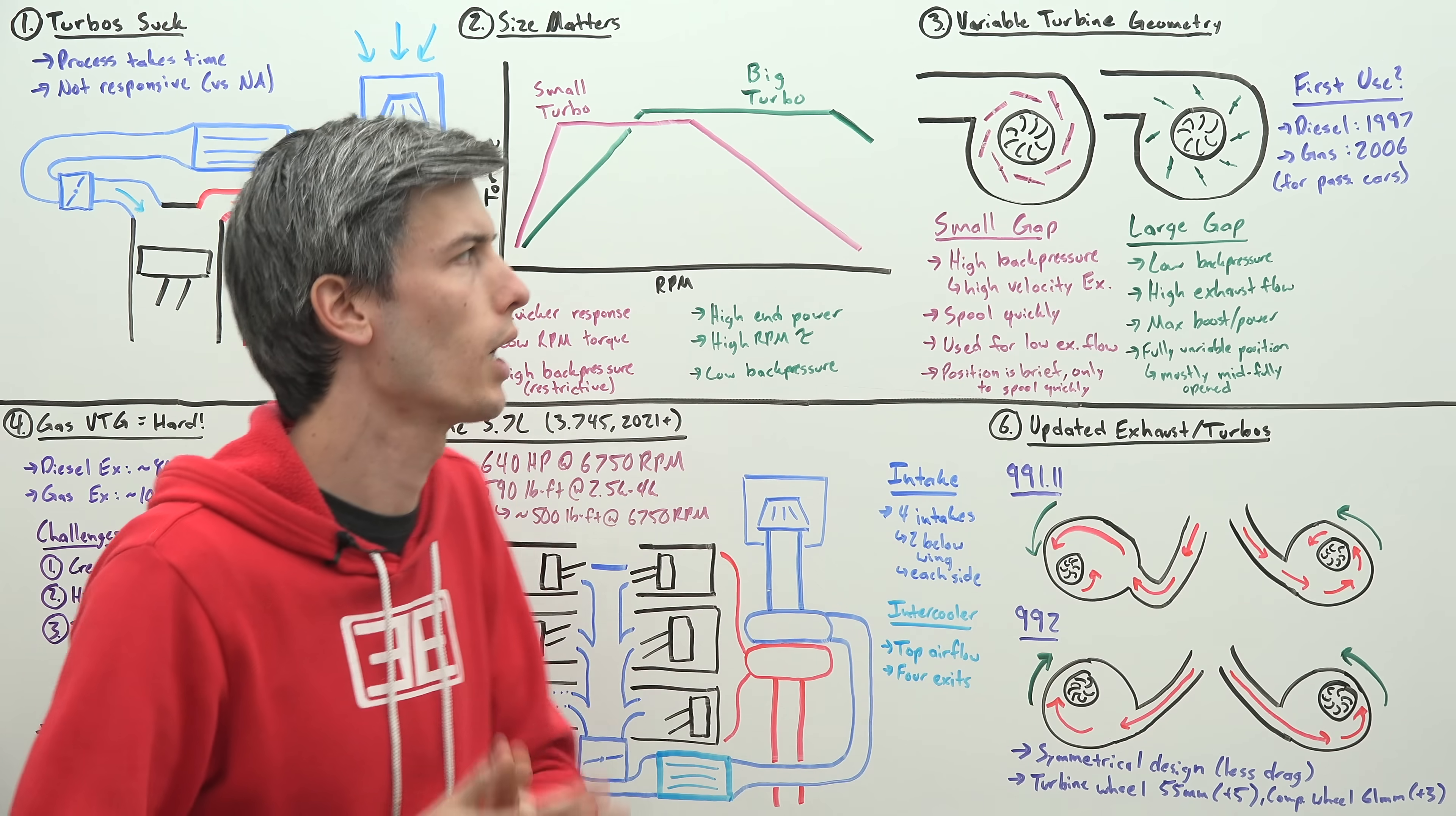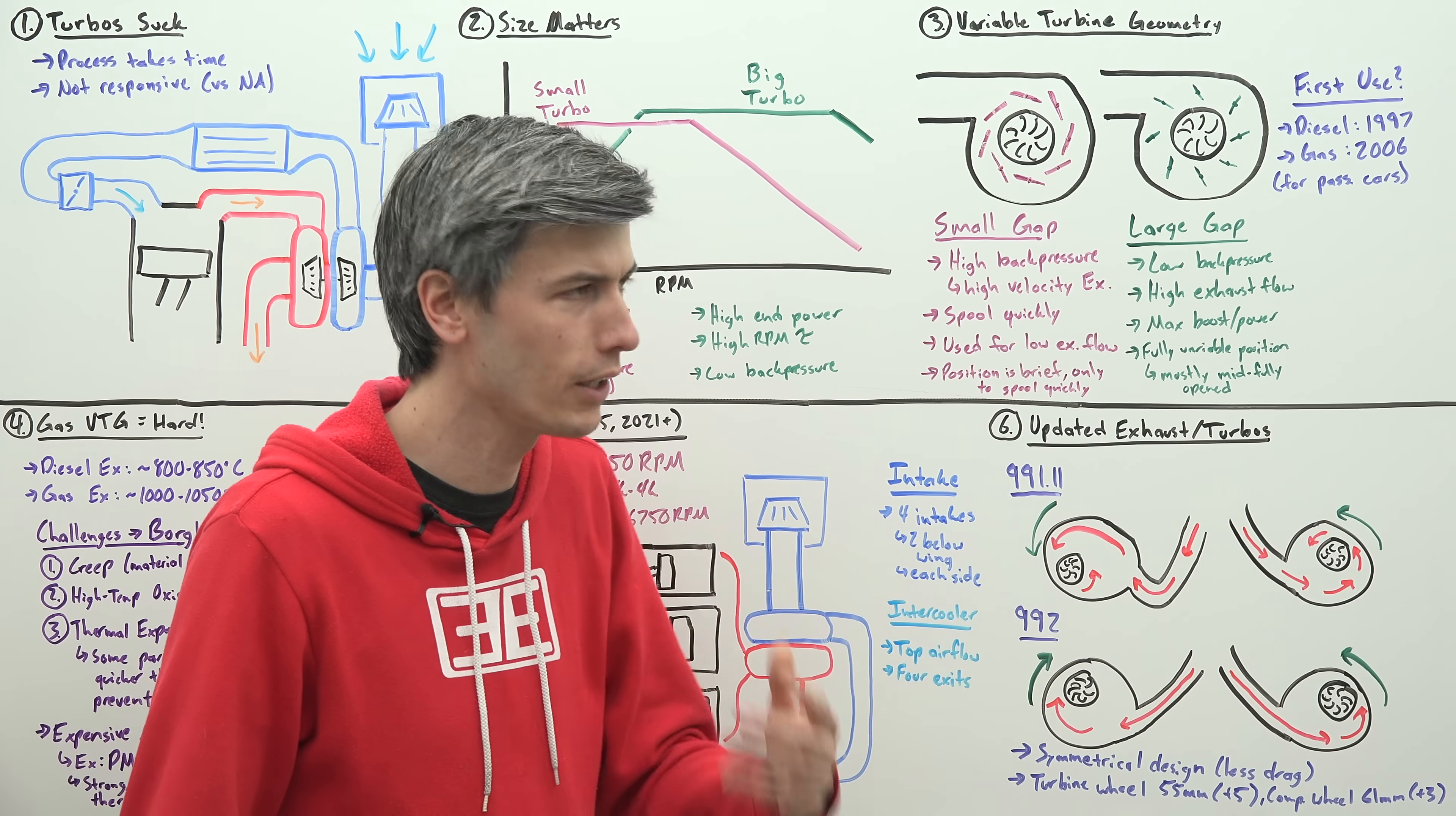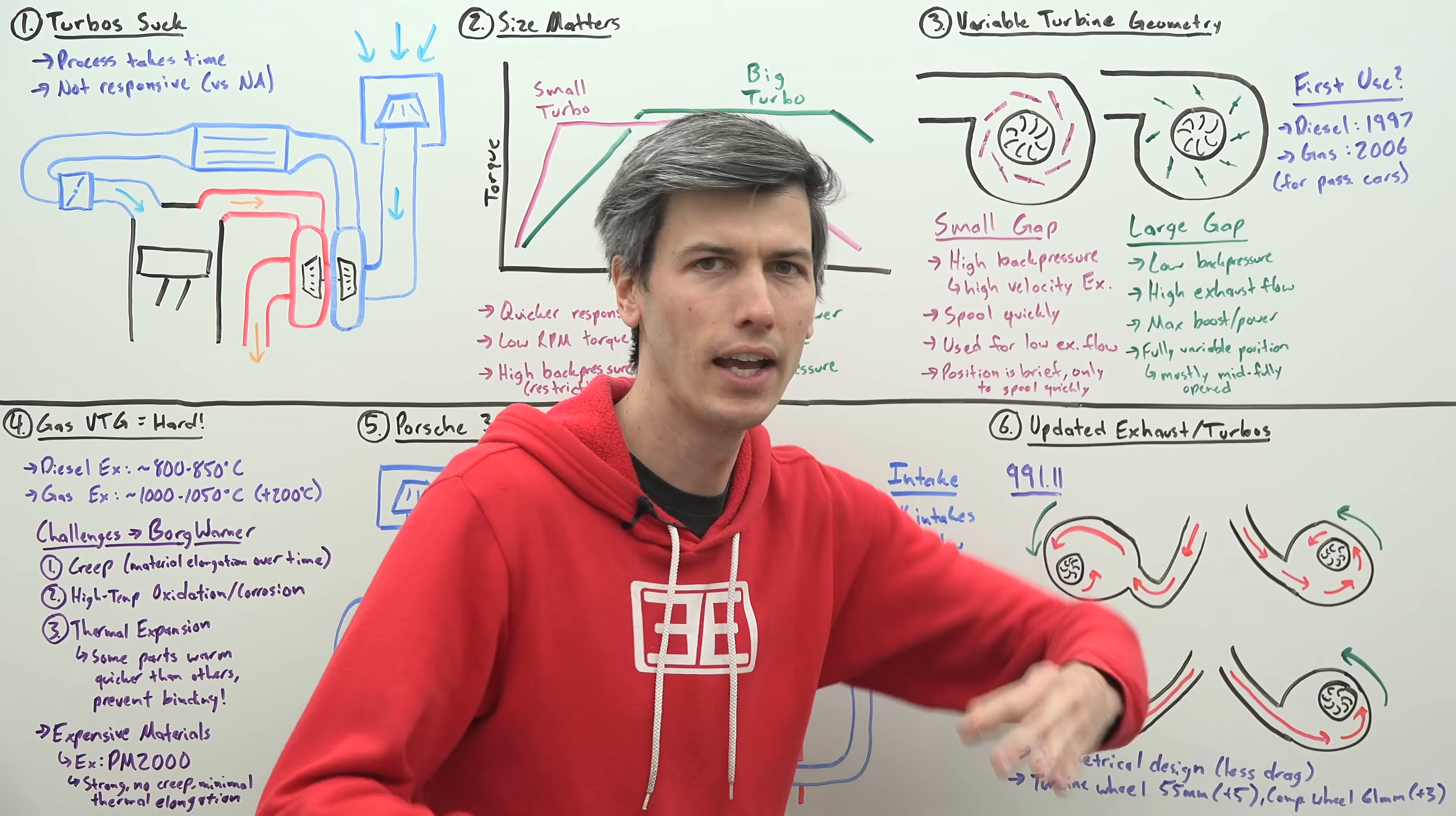The first use in passenger cars with variable turbine geometry was in 1997 using diesel engines, but it wasn't until nearly a full decade later that it was put into a gasoline vehicle, the Porsche Turbo, and it's still fairly rare to be used in gasoline engines.